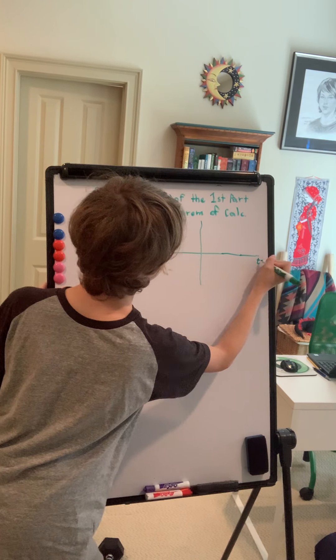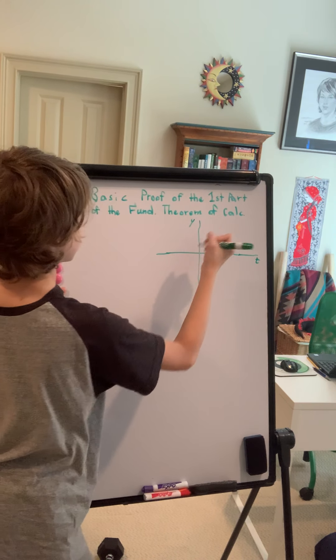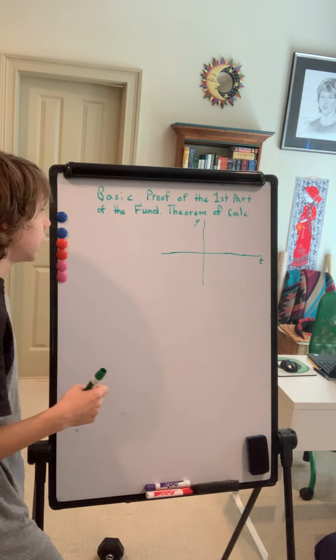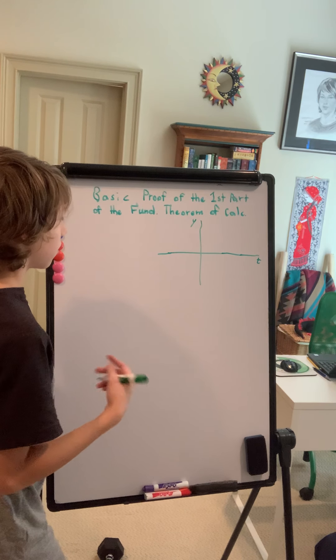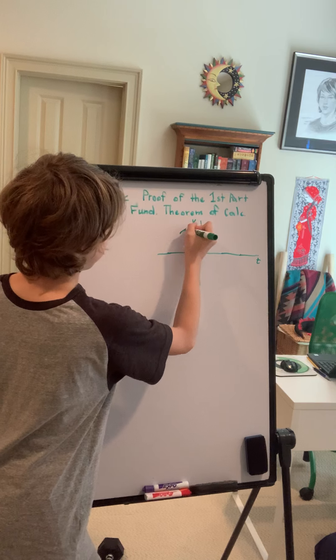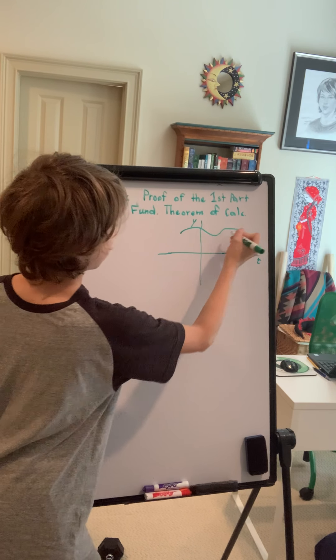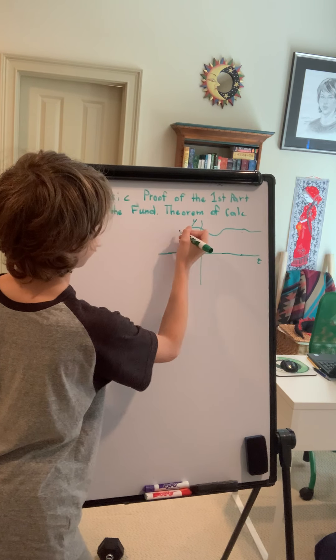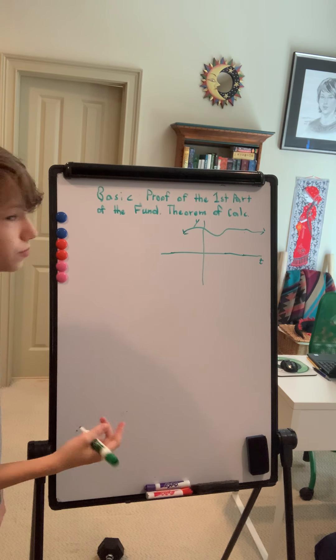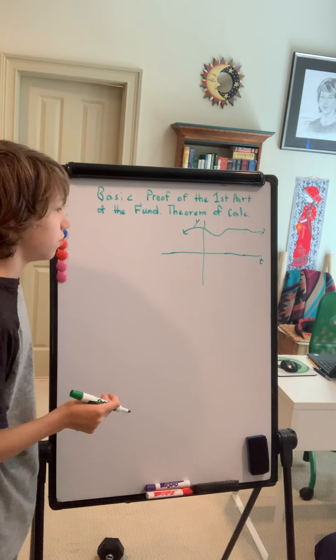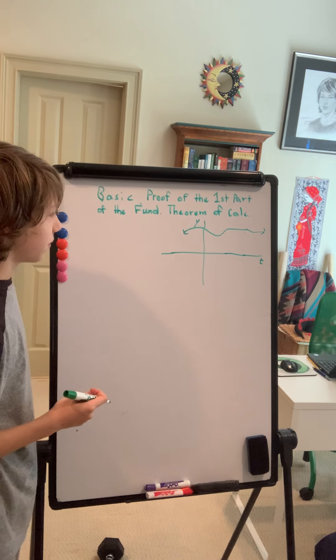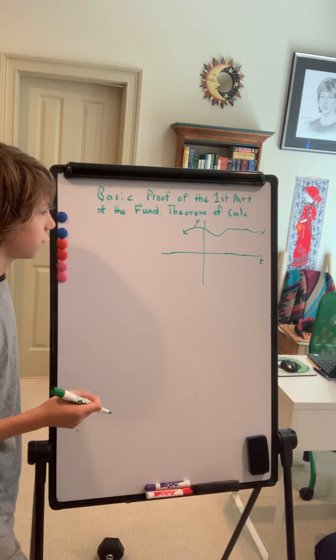And we're going to assume that that's our t-axis and that's our y-axis. And let's take some random function across this two-dimensional plane. Something like that. That's an interesting one. Okay, and this is obviously continuous. We're going to assume that the second part of the fundamental theorem of calculus is in play here, and that this function is continuous.